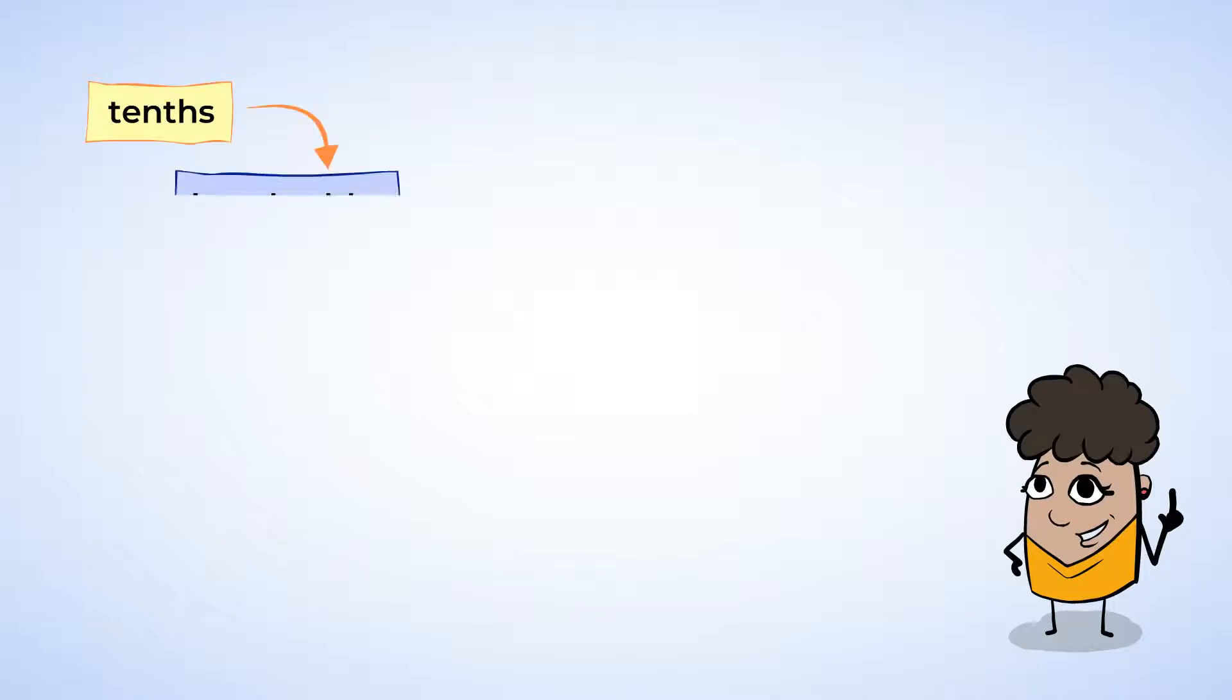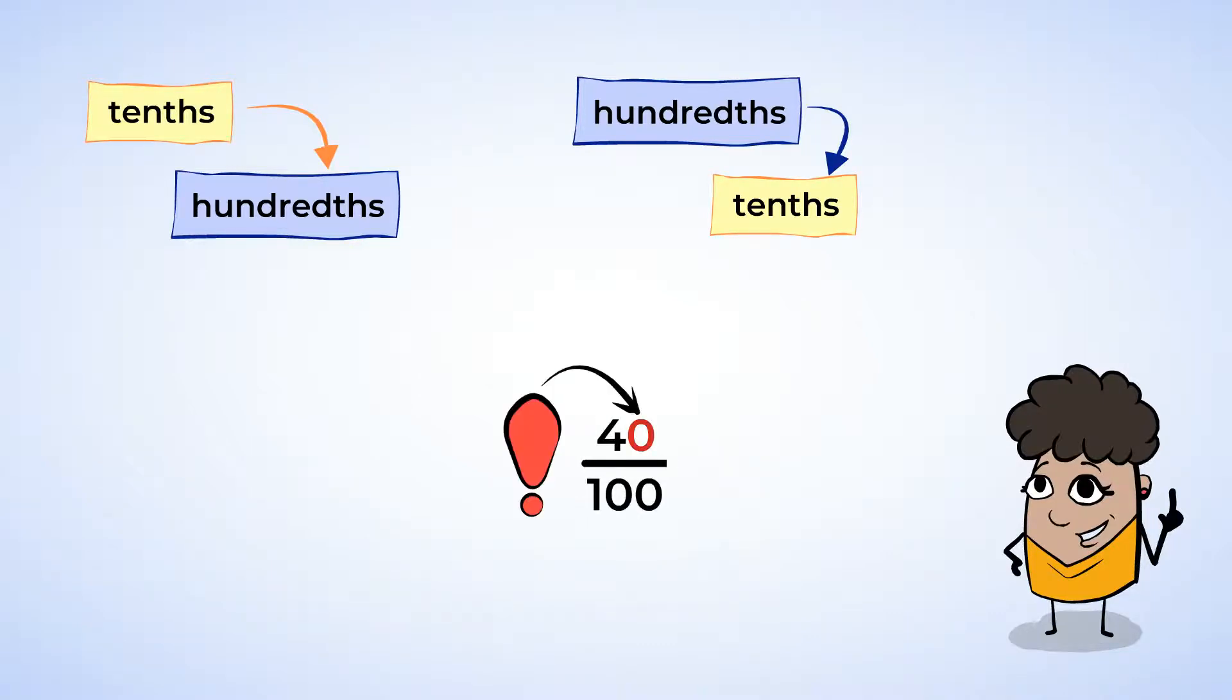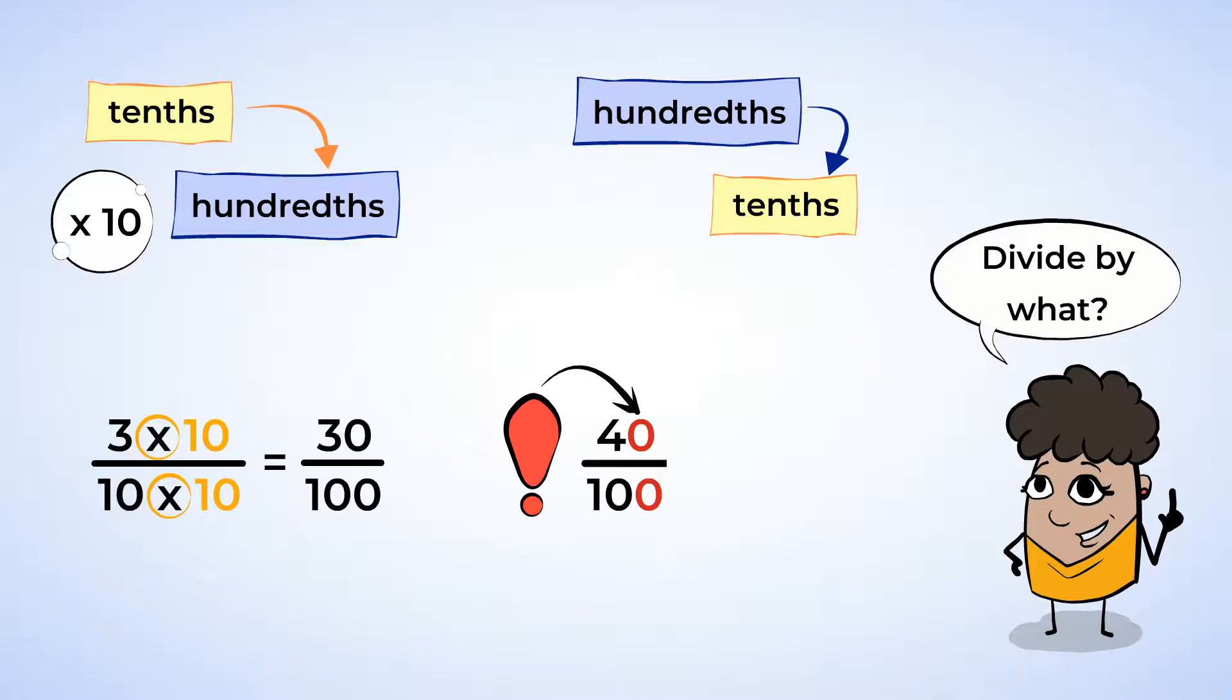So far we've been converting tenths to become hundredths. But what if we want to write a hundredths as a tenth? Now this can work if the numerator of the hundredths ends in a zero. This is important. So far we multiplied to turn a tenth into a hundredth. Now we need to divide to change a hundredth into a tenth. Divide by what? That's right! 10! Look at the example. Let's change 40 hundredths into tenths. 40 divided by 10 is 4, and 100 divided by 10 is 10. And now we have the fraction 4 tenths!